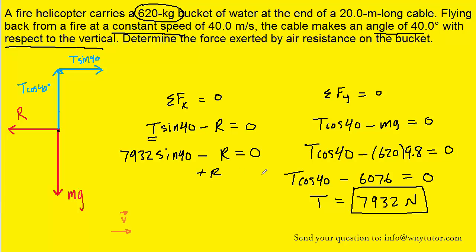We could then add r over to the other side. And when we do so we can see that the air resistance force r is equal to 7932 times the sine of 40 newtons. Then of course we can use our calculator to simplify that to get approximately 5098 newtons.